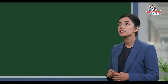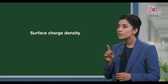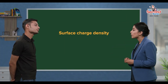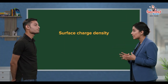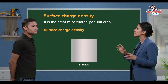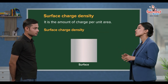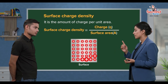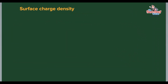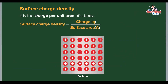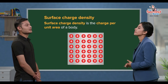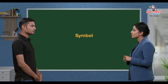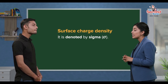Now let's discuss surface charge density. Surface charge density is related to the area of an object. Surface charge density means the charge per unit area of a body. The symbol for surface charge density is sigma.